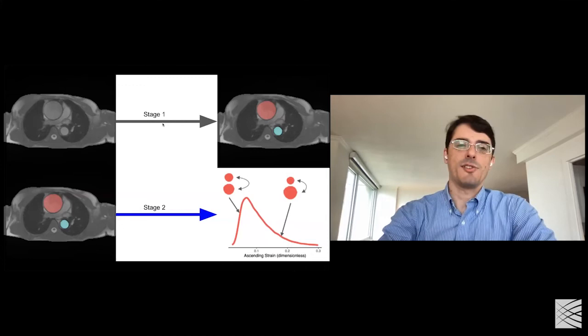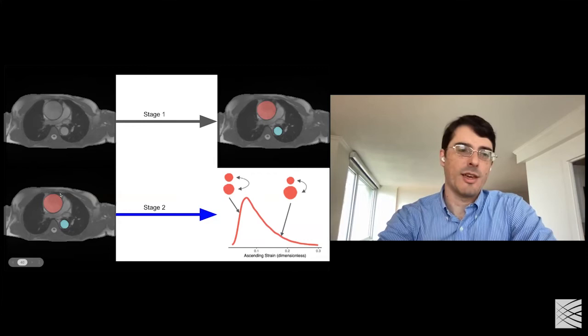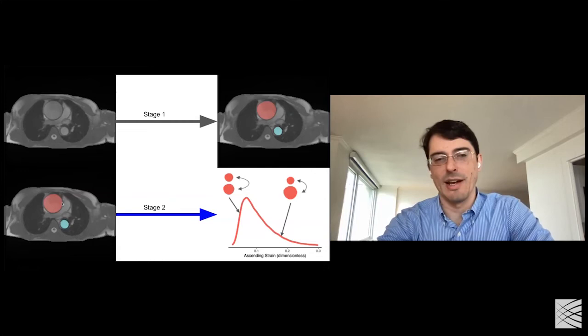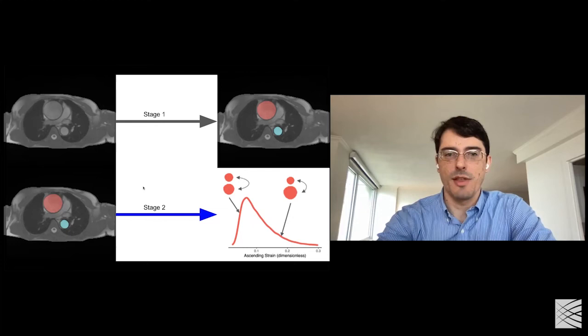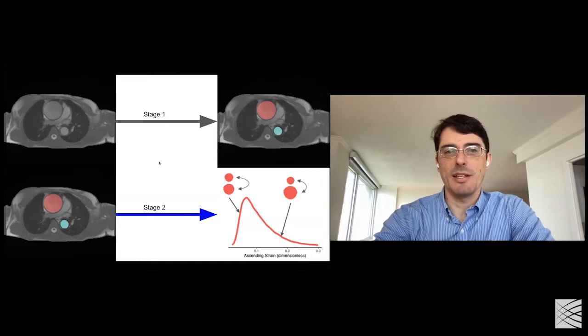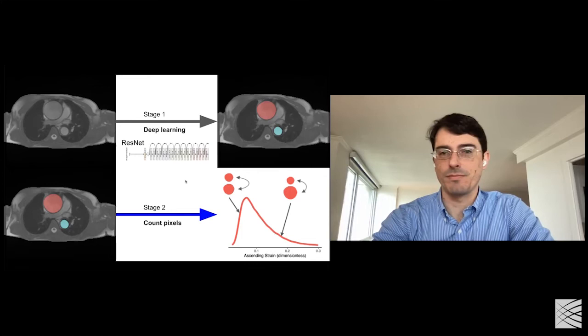The two-stage approach decomposes the problem: in stage one, we use deep learning for semantic segmentation; in stage two, we just count pixels. Each person has 100 images; we count the number of pixels belonging to their aorta, multiply by the known pixel size from image metadata, then track the biggest and smallest aortic area across their 100 images — and that gives us their aortic strain. By decomposing the problem this way, we take advantage of existing resources and reduce the second step to simply counting red pixels.